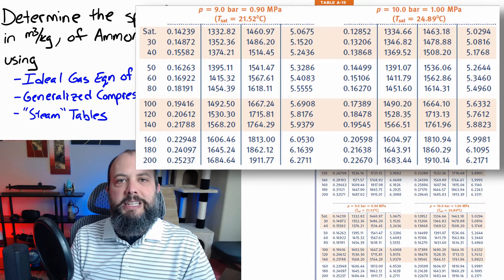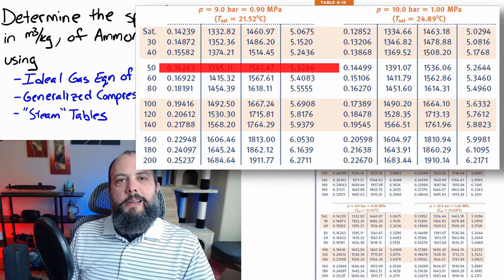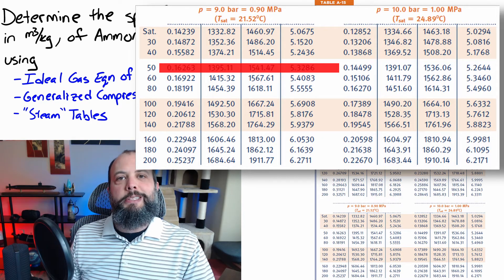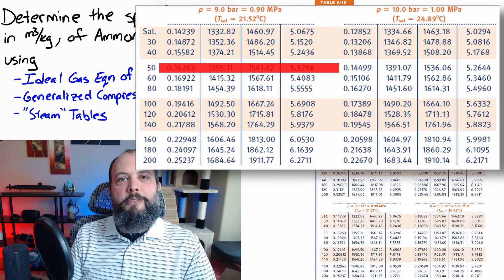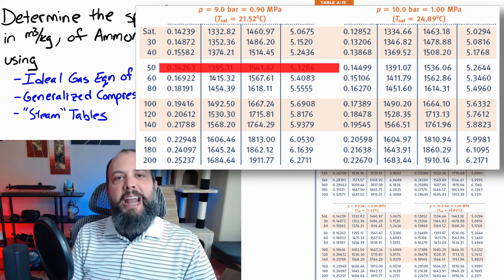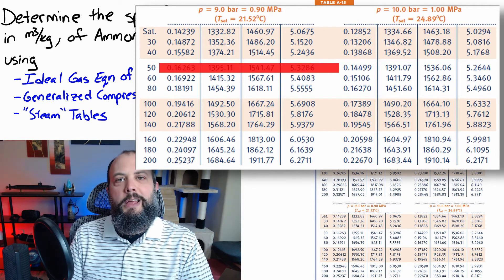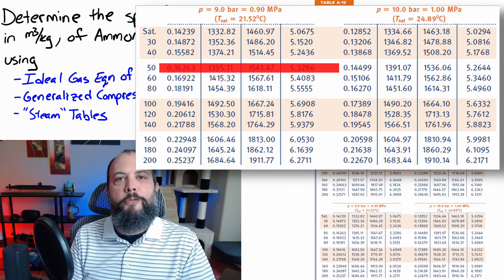find the mini table that lists 10 bar as pressure, and then you can have a big smile on your face when you look over on the left-hand side and see 50 degrees Celsius listed right there. If you haven't figured out why that's great news, that means you will not have to interpolate. And you get a final answer, 0.14499.